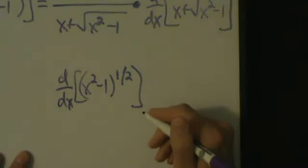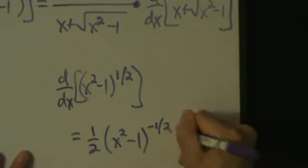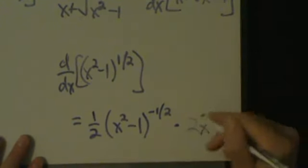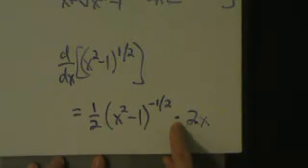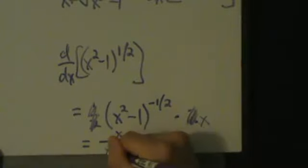The big guy is raised to the 1/2 power, so the derivative is 1/2 times x squared minus 1 to the negative 1/2, multiplied by the derivative of the little guy — that's the chain rule in action. When we simplify, the 1/2 cancels with the 2, and this becomes x divided by x squared minus 1 to the 1/2, which is the same as x over the square root of x squared minus 1.